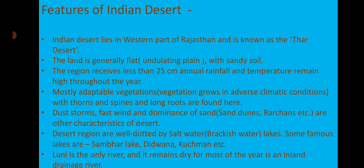The region receives less than 25 centimeters of annual rainfall and temperatures remain high throughout the year. Mostly adaptable vegetation — that means vegetation that grows in adverse climatic conditions — with thorns and spines and having long roots are found here.